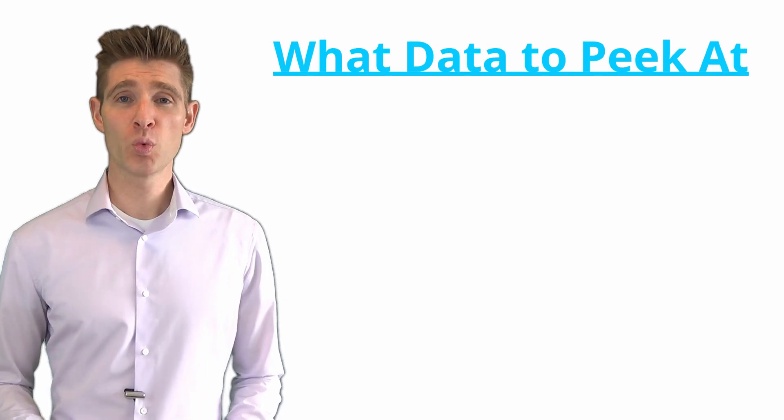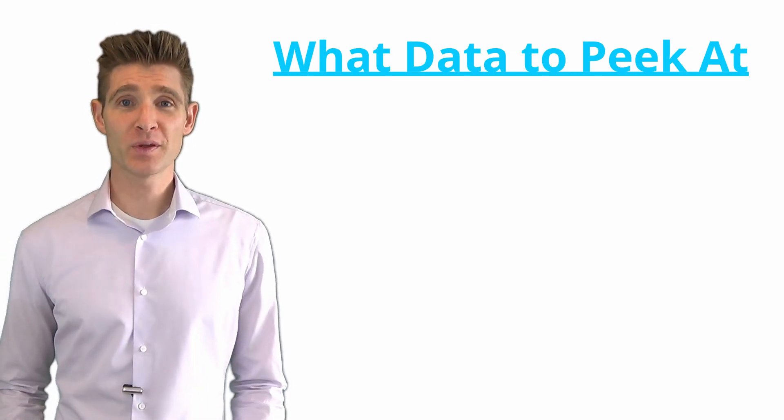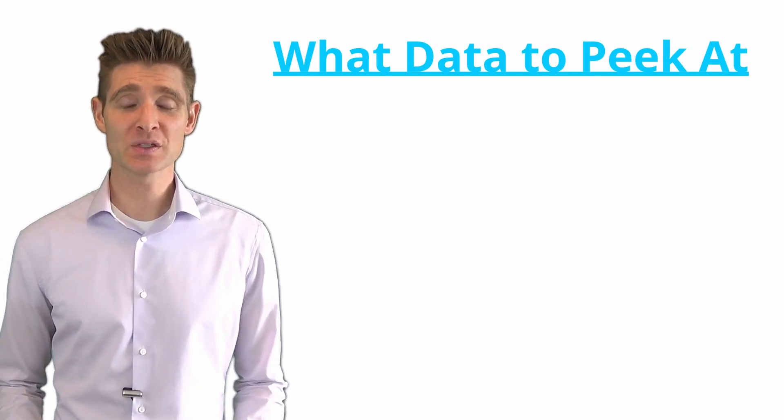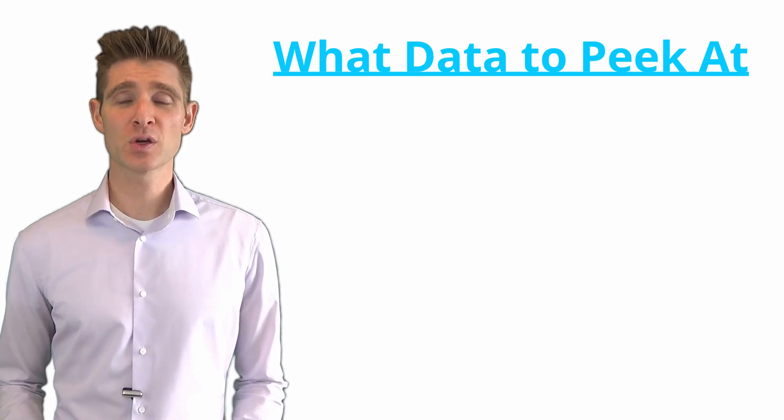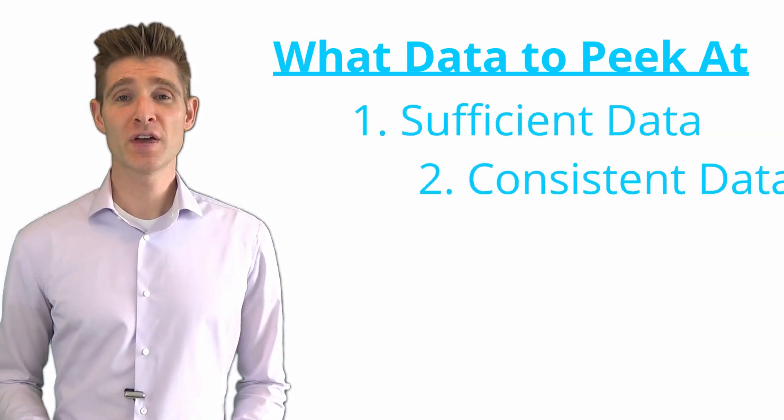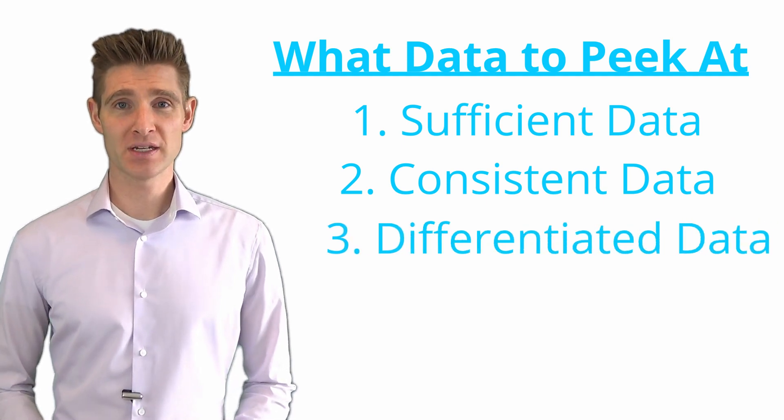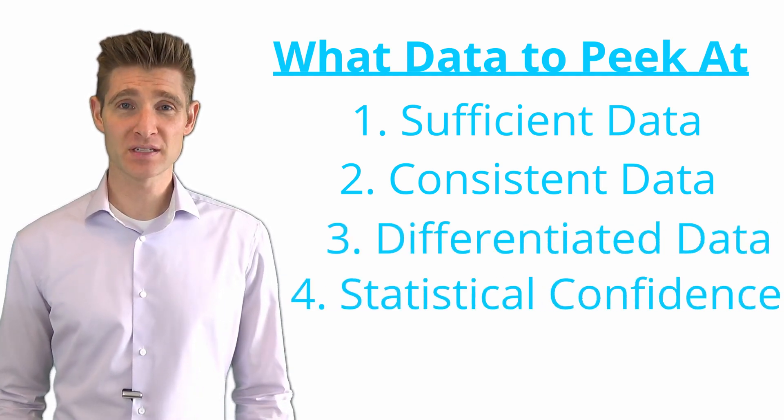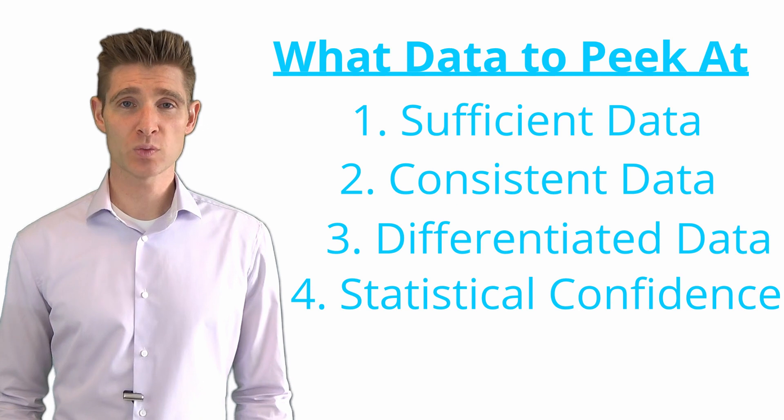What do you look for when you're looking at test results? I have a whole video on this, so I'm not going to dive into all the details, but at a high level the things that you look for is you have sufficient data, you have consistent data, and you have differentiated data. Additionally, you might also have statistical significance and you want to check that as well.